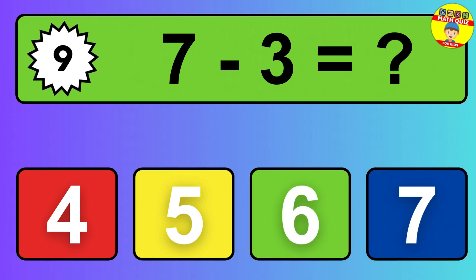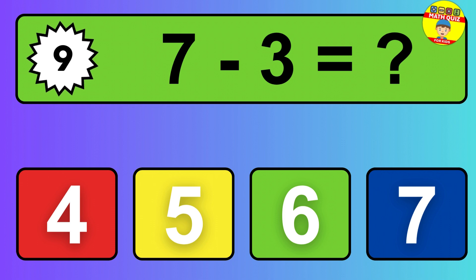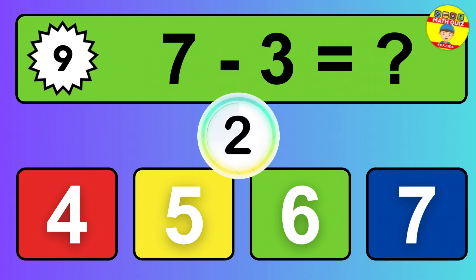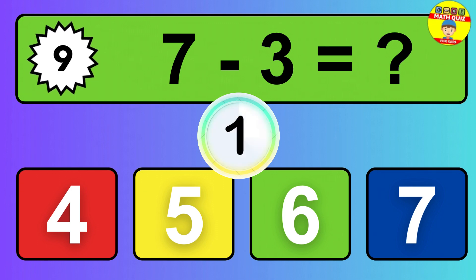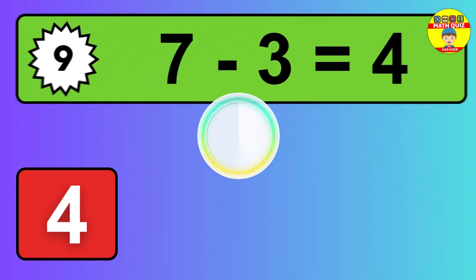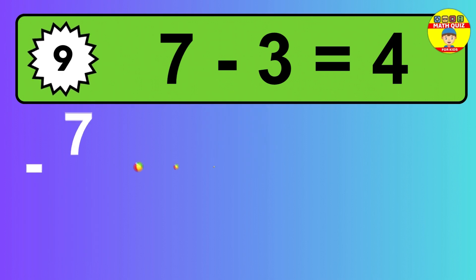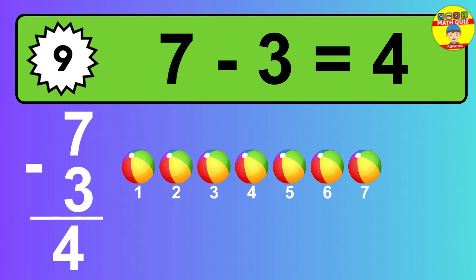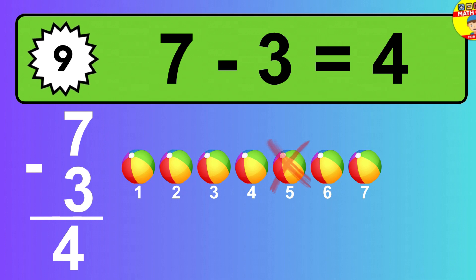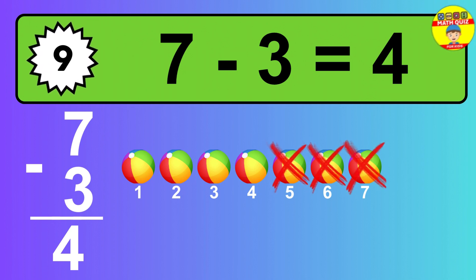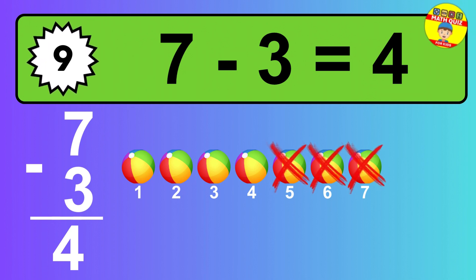Question 9. 7 minus 3 equals what? The answer is 7 minus 3 is 4. Let's count it. 1, 2, 3, 4.